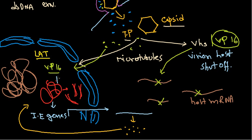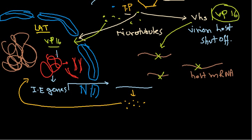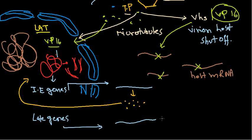Here we are only looking at the lytic phase of the cycle. They produce the immediate early genes, then early genes responsible for DNA replication, then late genes responsible for production of structural proteins. So finally, late gene expression occurs. Late mRNAs will be converted into late proteins, or structural proteins.